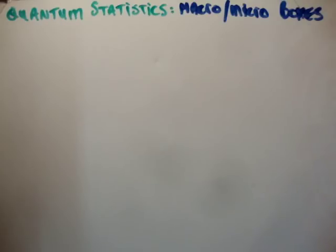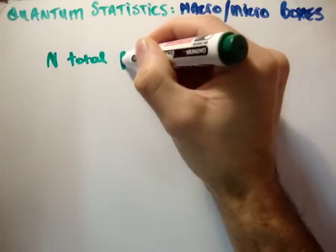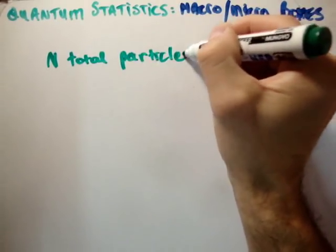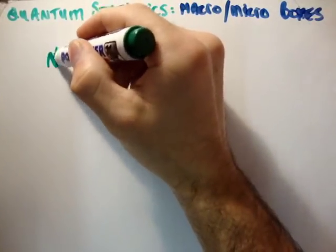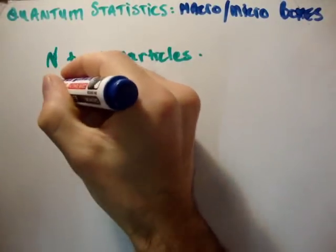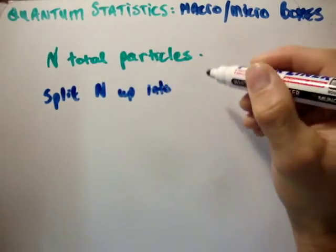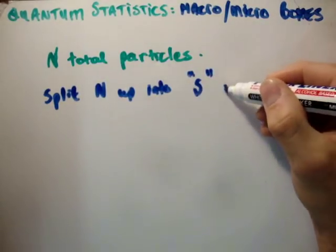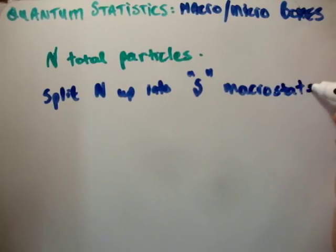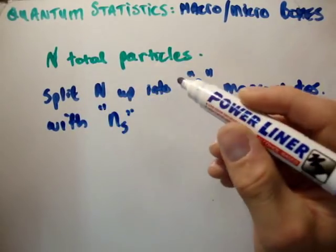First we'll discuss the topic of states. Let's say we have capital N total particles — you can think of that as anything, for example N people with N footballs. Now let's say we split N up into S macro states, with n_s particles in each.